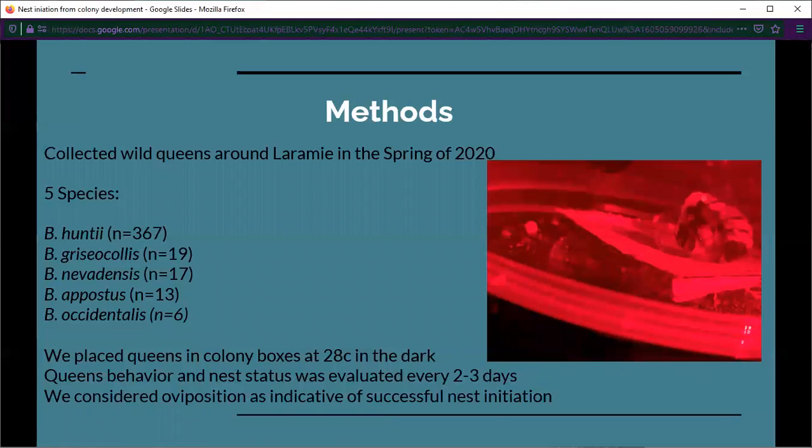Here on the right, you can see a huntii individual with her eggs. We give them all pollen balls initially so they can feed on them and lay their eggs on them. Here you can see that she laid her eggs on a pollen ball and she probably has some eggs underneath there as well. This queen would be one that was successful in nest initiation.